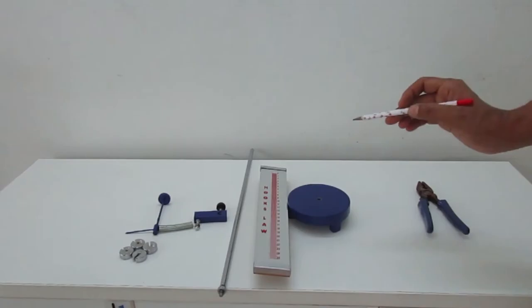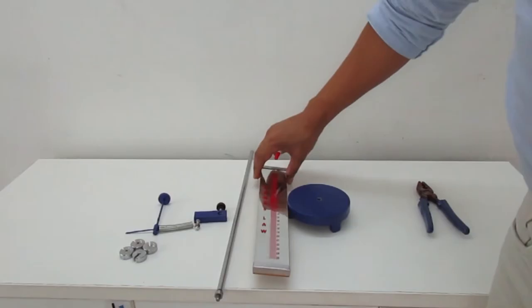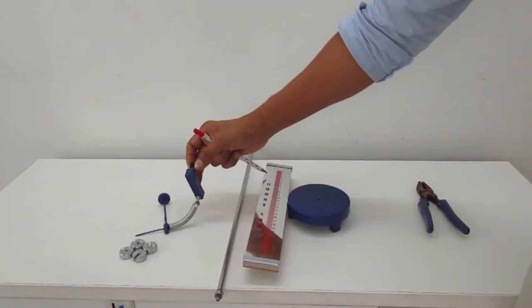Before we proceed, it is important to set up the Hooke's law apparatus correctly. So let's do that. A Hooke's law apparatus comes with a base, a stand, and a cm scale printed on the mirror.